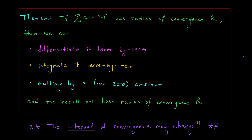The theorem says that if you have a power series with radius of convergence r, then we can differentiate term by term, integrate term by term, or multiply the terms by a non-zero constant — like multiply everything by two — and the radius of convergence r will remain unchanged. One small but important comment: we haven't said anything about the interval of convergence. That's because the interval of convergence may change when you make one of these transformations. If you differentiate or integrate a power series, you may add or lose endpoints from your interval. You'll see this in the examples to follow.